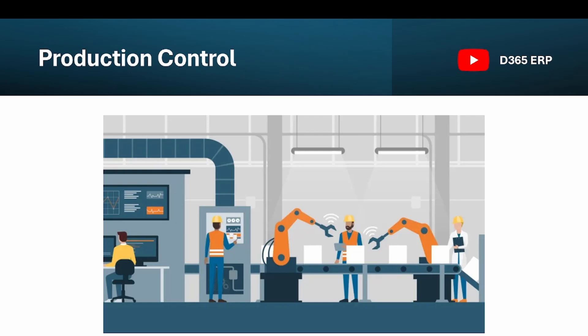I have divided this episode into three parts: first we discuss what you will learn in this series, then what this series exactly covers. It is majorly focused on the discrete manufacturing part. Based on your feedback, comments, and views, we will cover process manufacturing, bonds, and lean manufacturing in the later part of this series, or we will create a new series for the same.